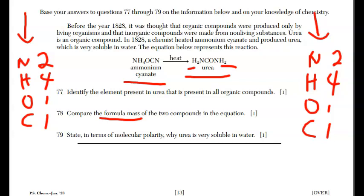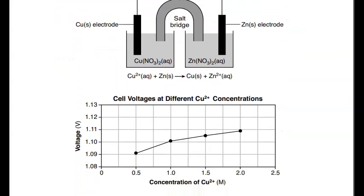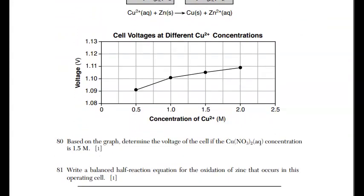For 79, it says state in terms of molecular polarity, why urea is very soluble in water. You want to remember, water is a polar molecule. That must mean urea is also a polar molecule. Like dissolves like. We are close to the end here. We have two questions, 80 and 81, that have to do with a voltaic cell. You've studied this with electrochemistry. We're giving a graph regarding the voltages.